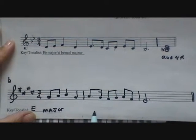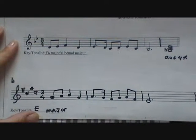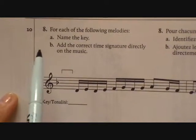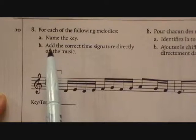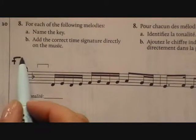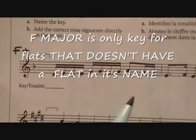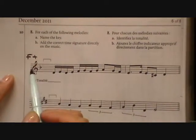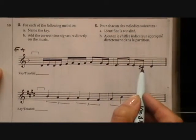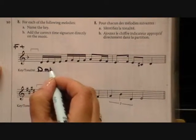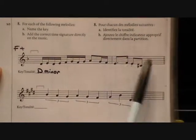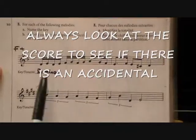Now we're going to do question 8, which is to name the key and add correct time signatures. For each of the following melodies, name the key and add the correct time signature directly on the music. First let's name the key — we see a B flat, so we'd say F major. But I see an accidental there. Who's F major related to? You go three half steps down: D minor. The seventh note to D is C sharp. So it's safer to say this is D minor, because that seventh is raised — it would look like it's the minor key.